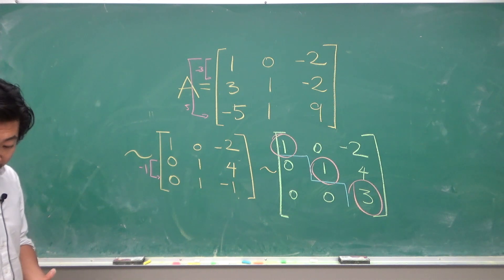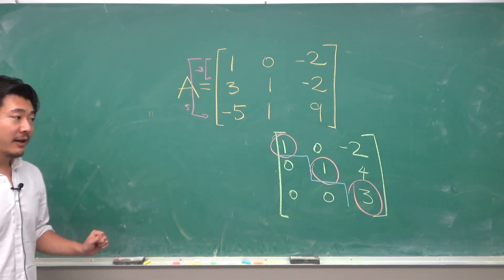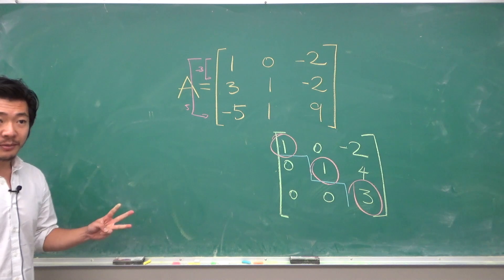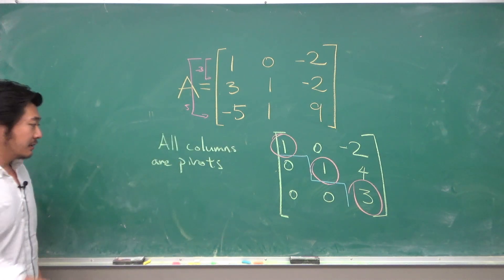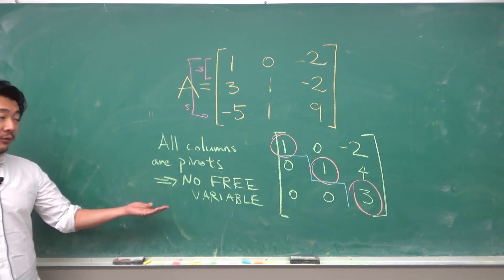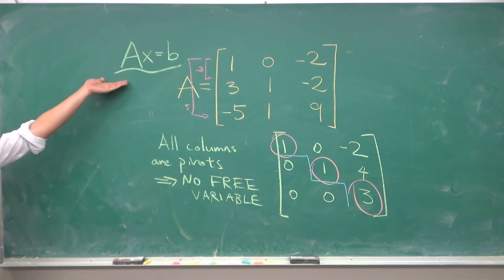But we can infer other things. For example when a 3x3 has three pivot positions that means that all the columns are pivot columns and so there will be no free variables to this linear system of equations.